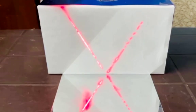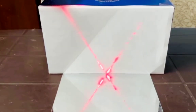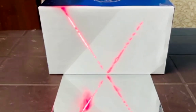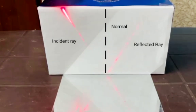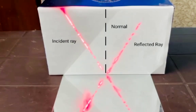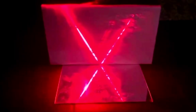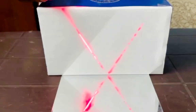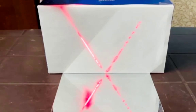I am shining the red laser light from the side, so you can clearly see the incident ray and the reflected ray as well. The reflected ray, incident ray, and normal are here, and you can see all of them lying on the same plane. I have switched off the light in the room for a better view.